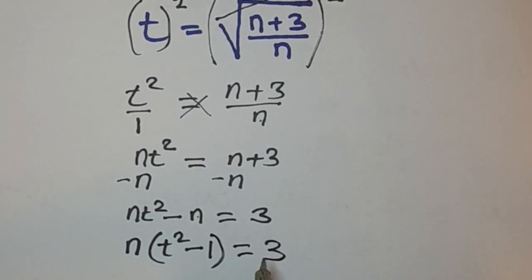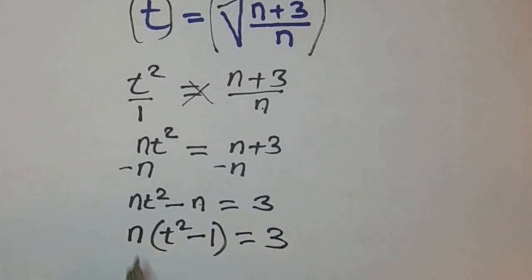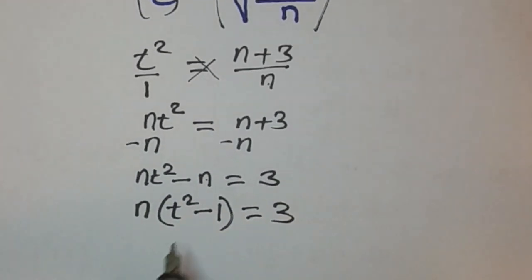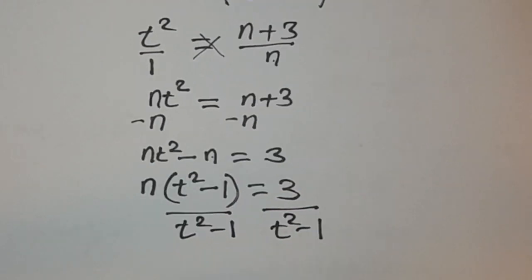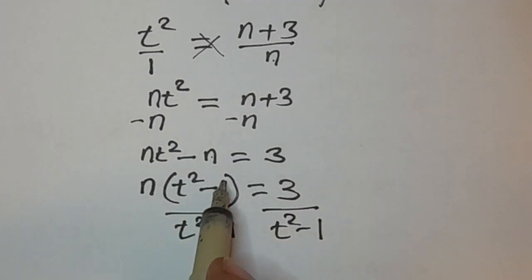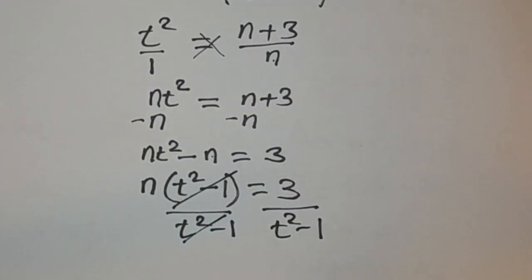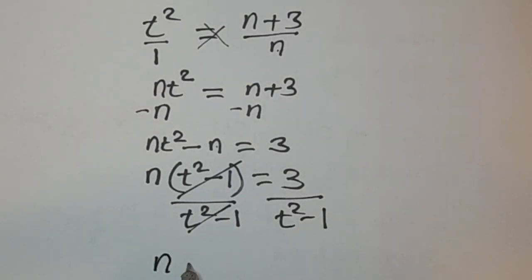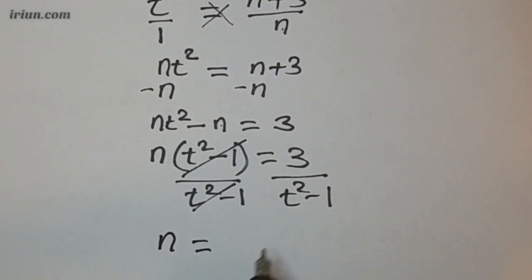Your aim is to remain with n, so divide through by t² minus 1. These cancel out, and you remain with n is equal to 3 over t² minus 1.